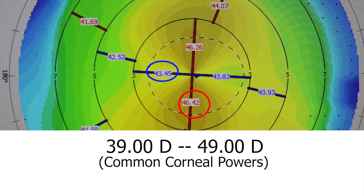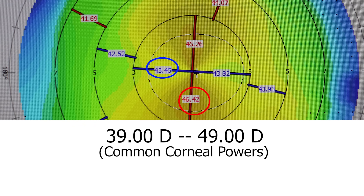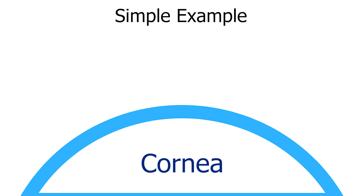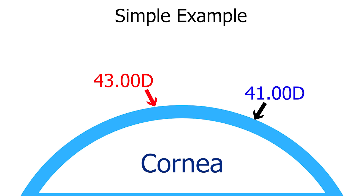Most corneas have some curvature somewhere between 39 and 49 diopters, and that number tells us the amount of curvature or power that the cornea has to bend light. If there is astigmatism — say the curvature is 43 diopters in one place and 41 diopters in another — the amount of astigmatism is the difference between those two values: in this example, two diopters of corneal astigmatism.